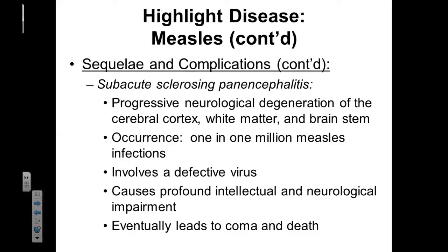Some other complications or sequelae associated with measles include subacute sclerosing panencephalitis. When we see 'pan,' that means the whole thing. 'Enceph' refers to the brain, and 'itis' means inflammation. So subacute sclerosing panencephalitis is a mild inflammation of the entire brain. It's a very progressive condition that results in deterioration of the brain, with breakdown of the white matter and the gray matter of the brain stem.